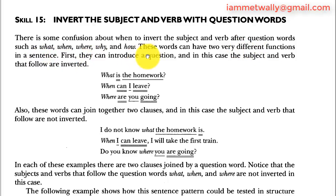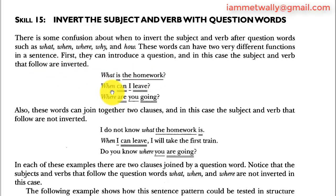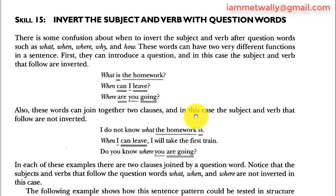First, they can introduce a question, and in this case the subject and the verb that follow are inverted: 'What is the homework?' 'When can I leave?' 'Where are you going?' Also, these words can join together two clauses, and in this case the subject and the verb that follow are not inverted: 'I don't know what the homework is.'